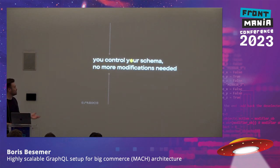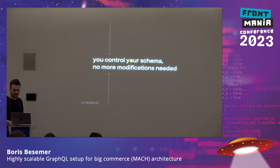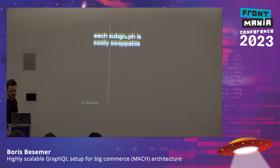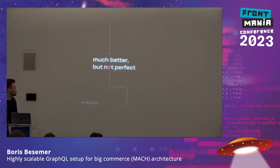You now have one endpoint to query and introspect — you don't need multiple endpoints anymore. You have complete control of your schema; you don't need to do any random modifications. If your schema isn't good enough, you make it better, because you own it. And each of those subgraphs is easily swappable — you can swap in another product service as long as the schema stays the same. But it's not perfect yet — we still have some problems left.